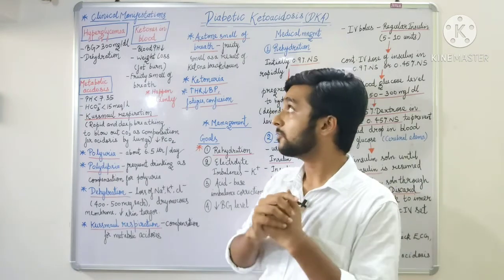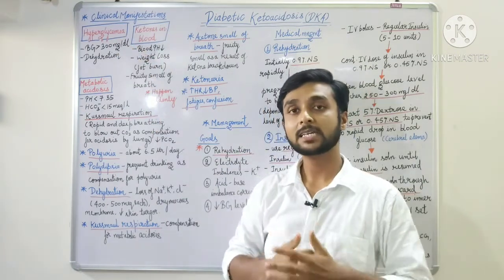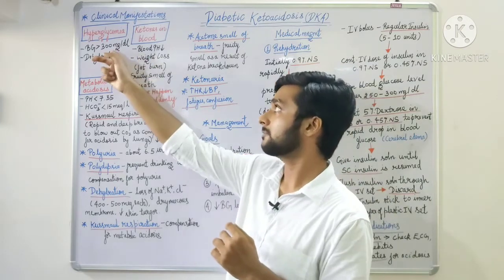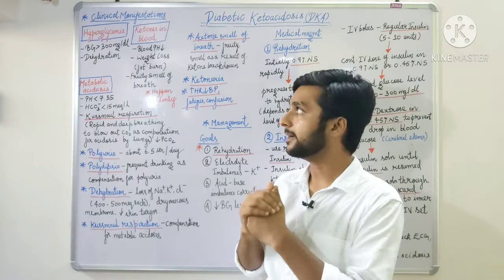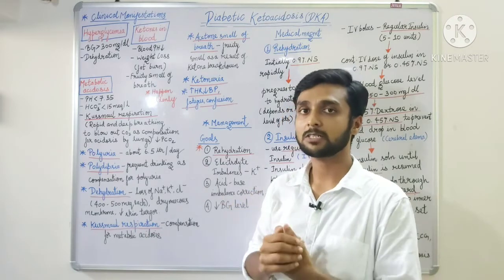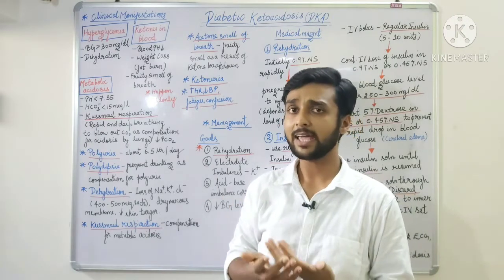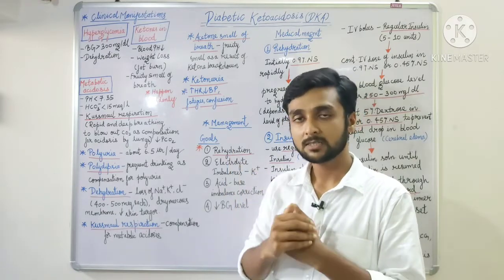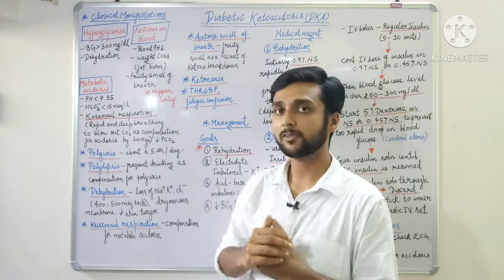First we have hyperglycemia. In DKA, when our blood glucose level is more than 300 mg/dL, osmotic pressure will increase and excessive urination will increase, leading to dehydration.